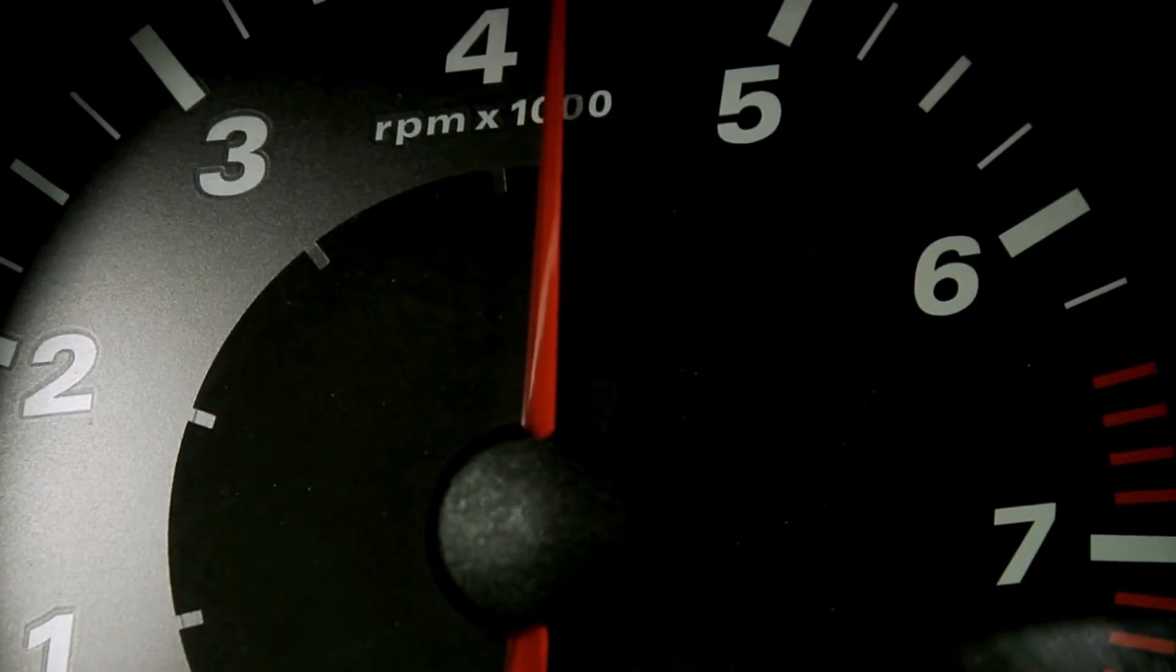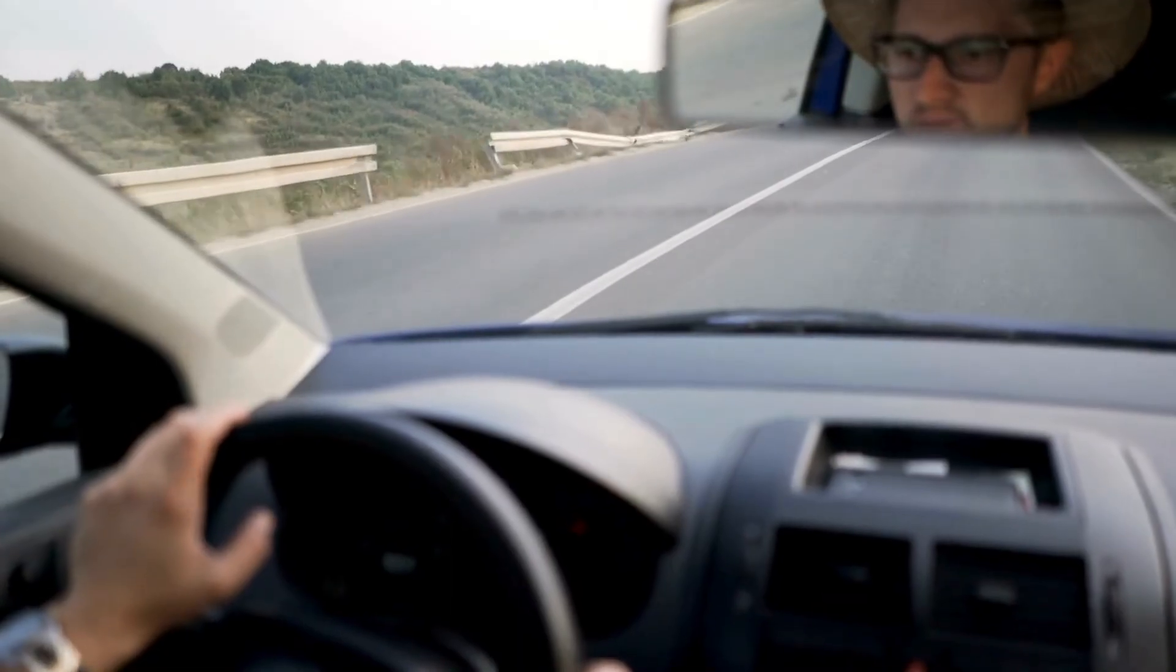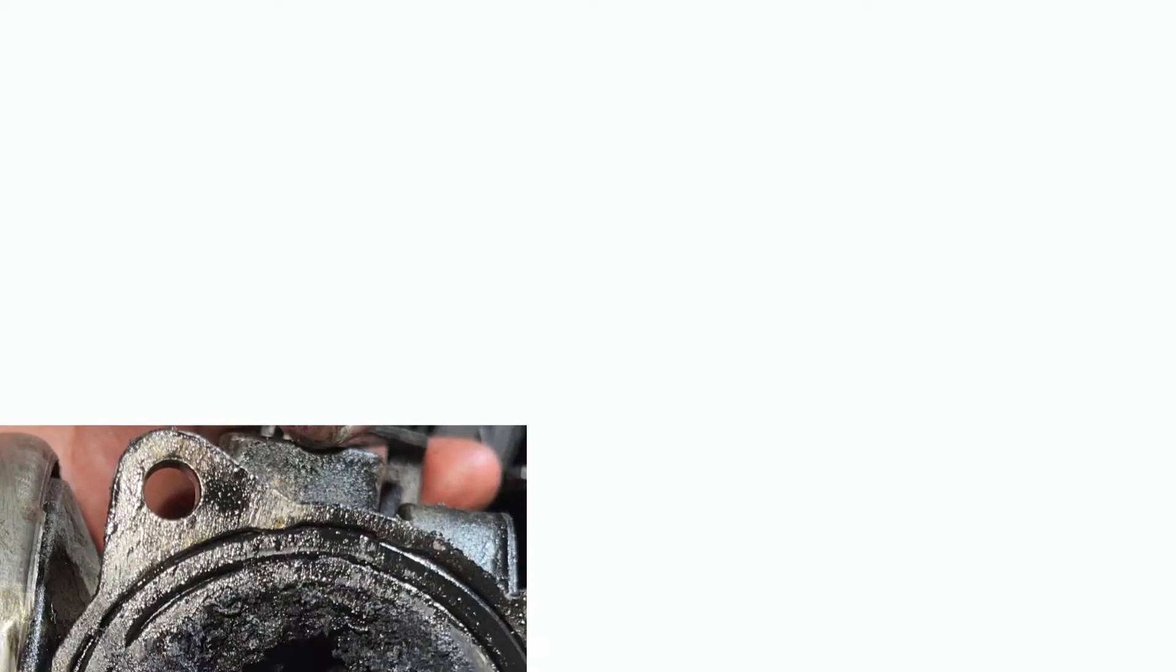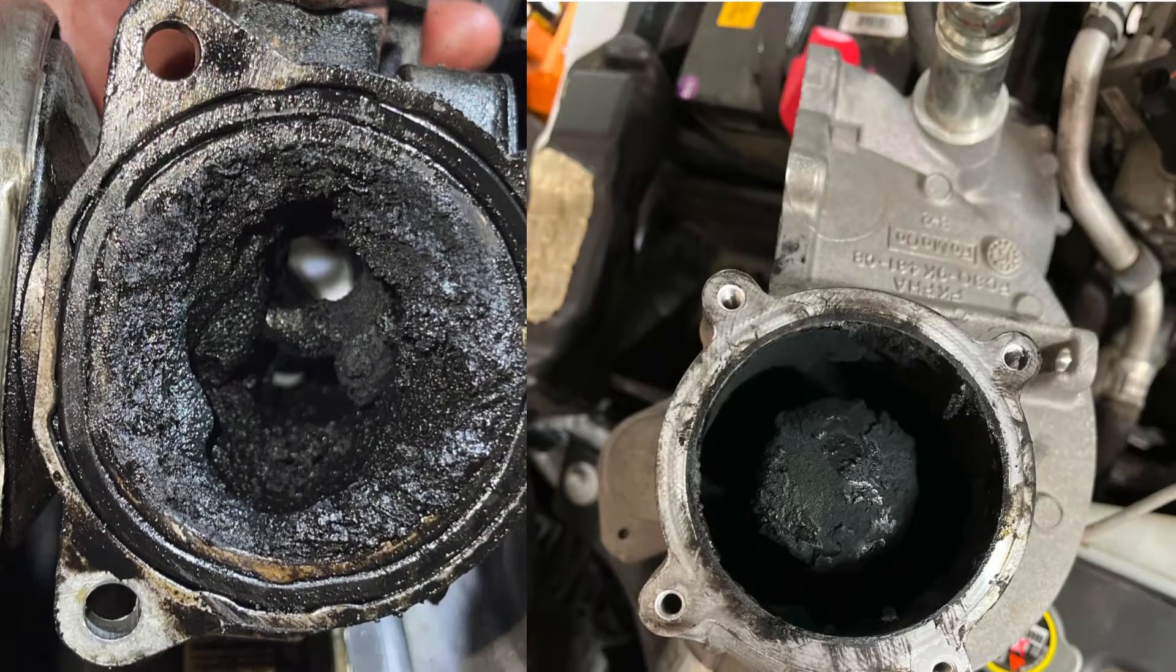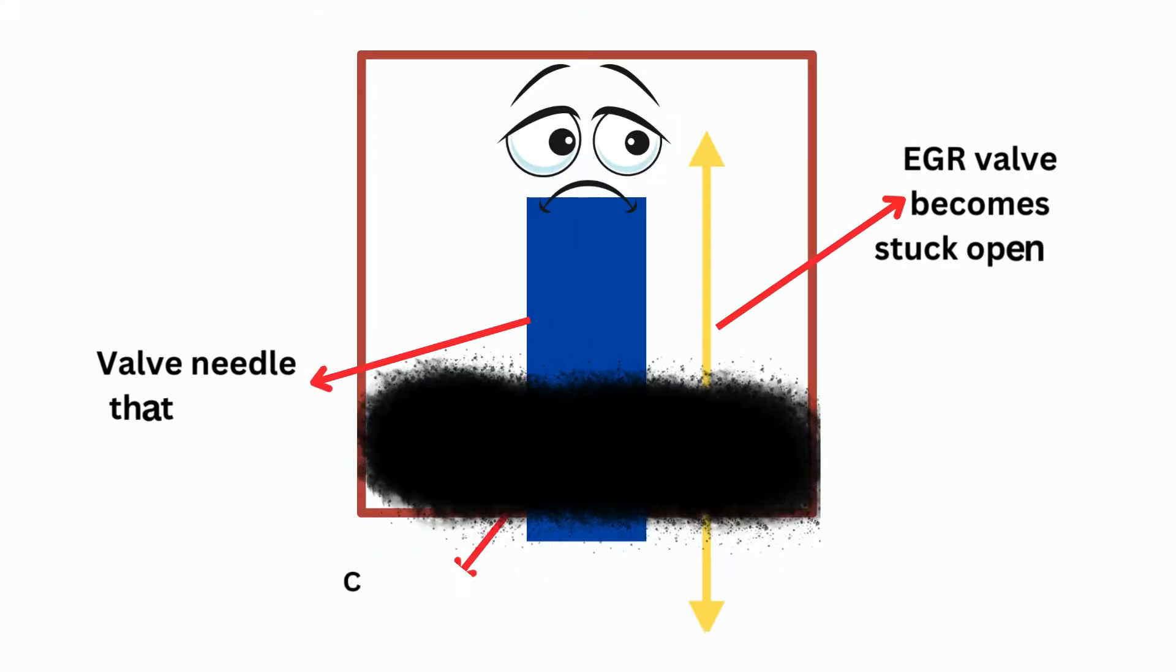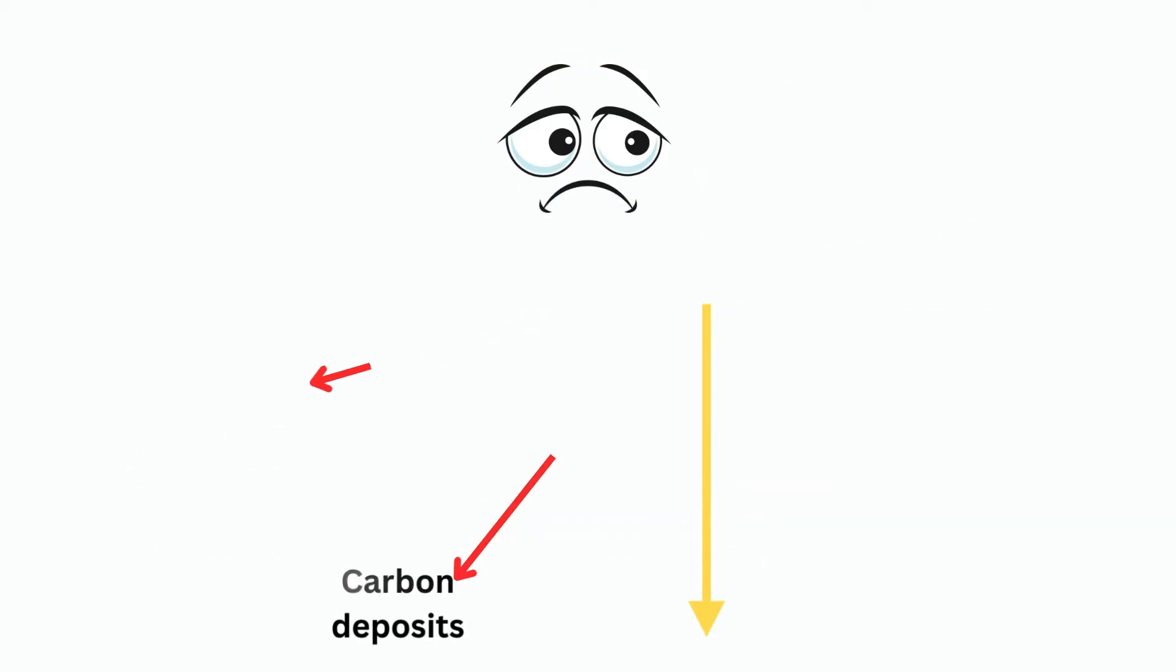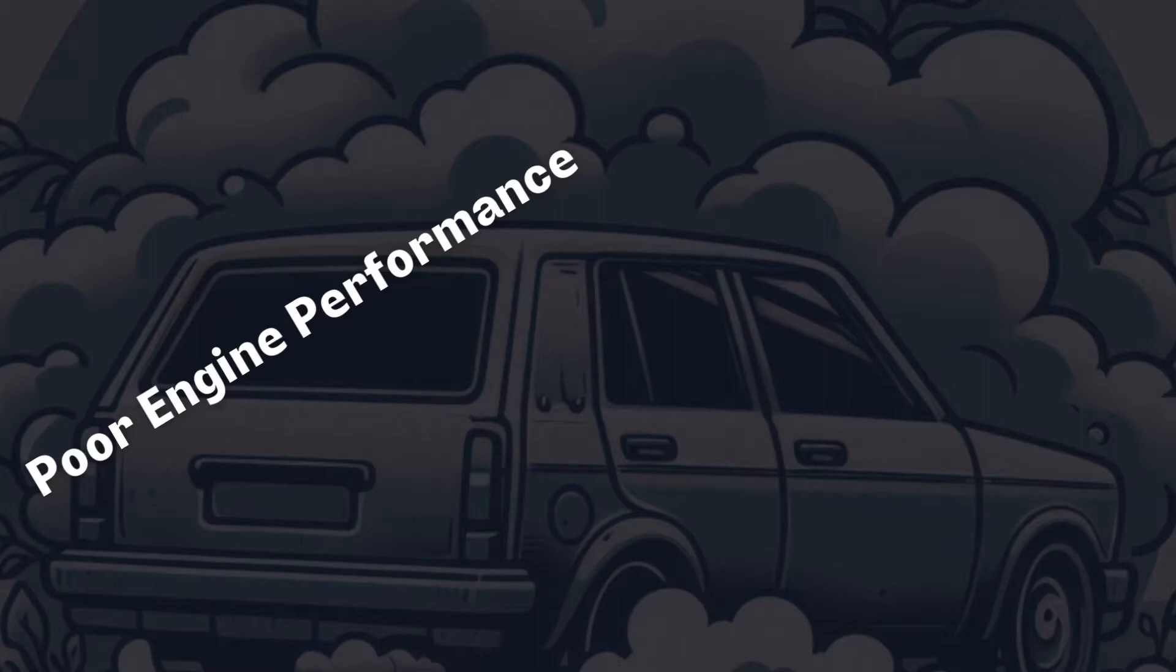At high engine loads or RPM, when full power is demanded, the EGR will close. Over many accumulated miles, the EGR passageways and valve components become coated and clogged from soot, carbon deposits, and small exhaust particles. This contamination buildup causes the EGR valve to stick or not fully close properly. The result is poor engine performance, decreased fuel economy, and increased emissions output.